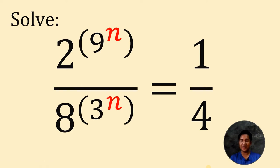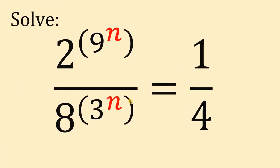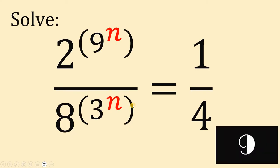Can you solve this math challenge? Here's the question: Solve for the value of n given that 2 raised to 9 raised to n, all over 8 raised to 3 raised to n, equals 1 over 4. You can pause this video if you want to give this problem a try.